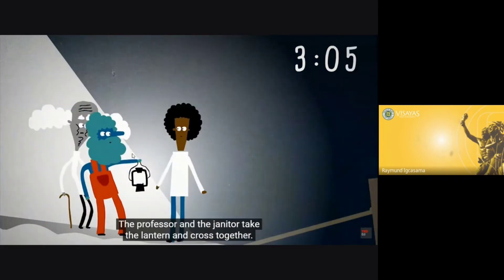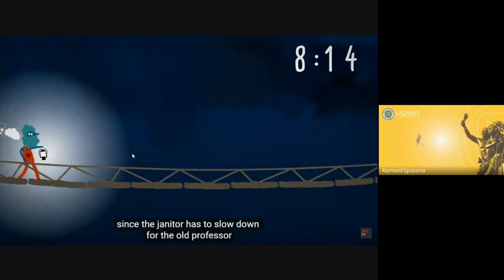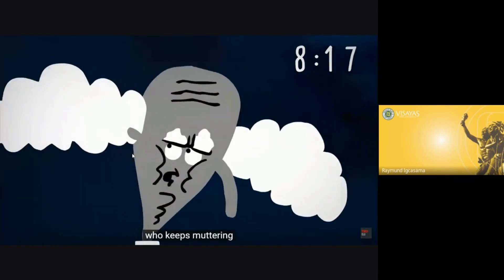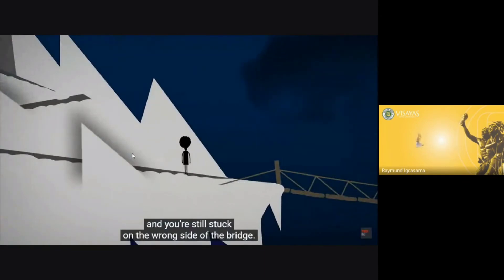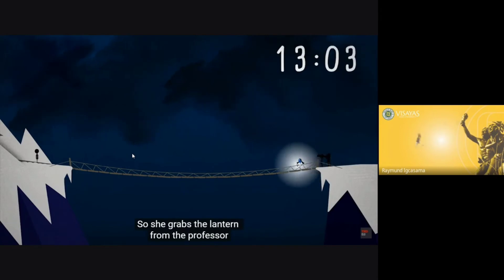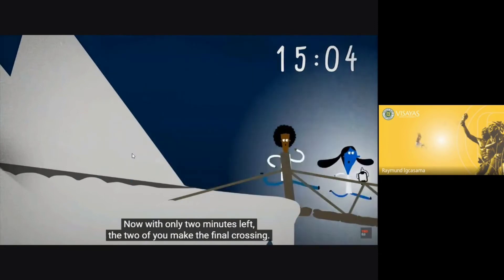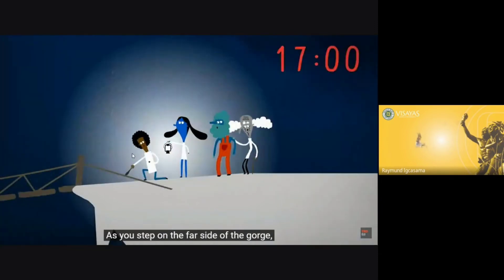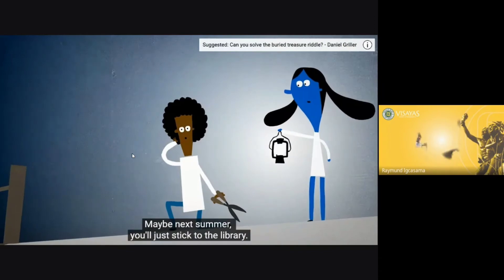Now comes the hard part. The professor and the janitor take the lantern and cross together. This takes them ten minutes, since the janitor has to slow down for the old professor, who keeps muttering that he probably shouldn't have given the zombies night vision. By the time they're across, there are only four minutes left, and you're still stuck on the wrong side of the bridge. But remember, the lab assistant has been waiting on the other side, and she is the second fastest of the group. So she grabs the lantern from the professor and runs back across to you. Now, with only two minutes left, the two of you make the final crossing. As you step on the far side of the gorge, you cut the ropes and collapse the bridge behind you, just in the nick of time.